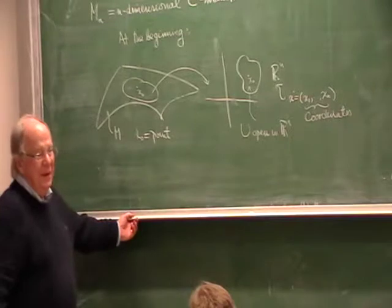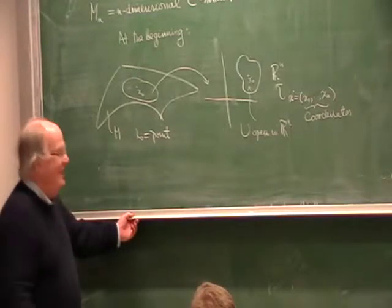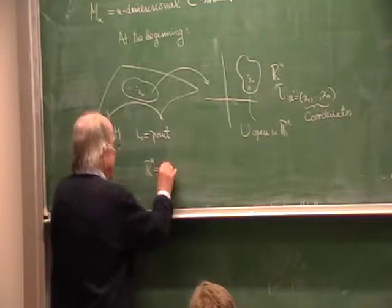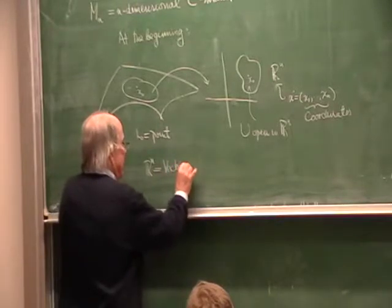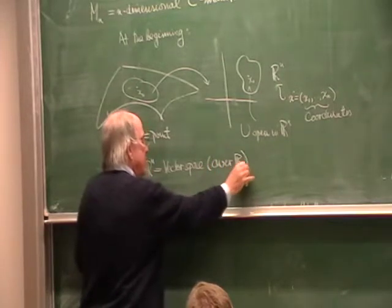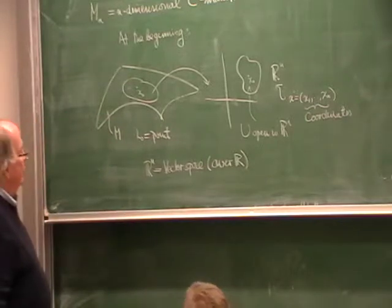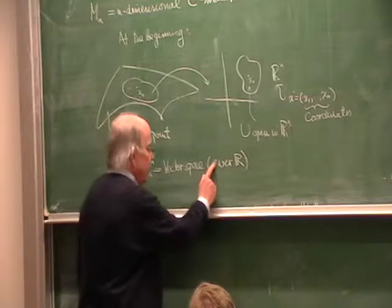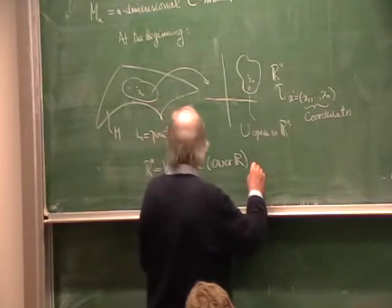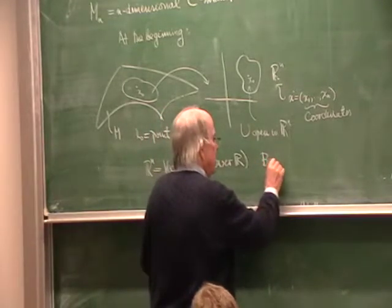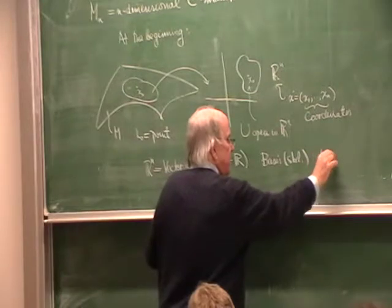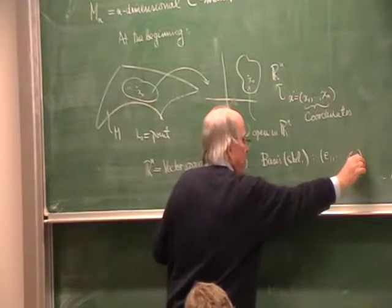I want to remind you what a coordinate is. Rⁿ is a vector space, and in our case we are thinking of this vector space over the real numbers — this is real geometry, over the real numbers. It has a basis, maybe the standard basis: e₁ through eₙ. I write it in brackets as column vectors in the usual way.